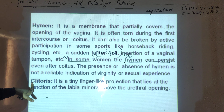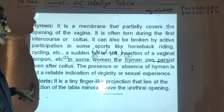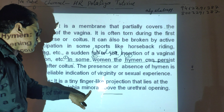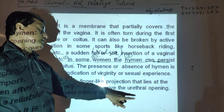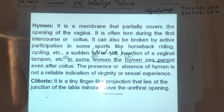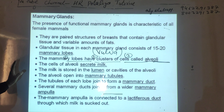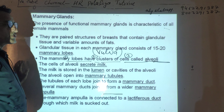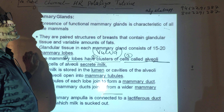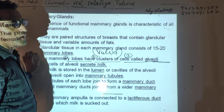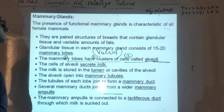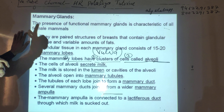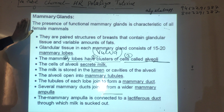The clitoris is a tiny finger-like projection that lies at the junction of the labia minora, above the urethral opening. In females, the genital pore and urethral pore are separate, whereas in males there is only one opening.